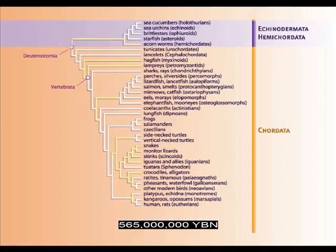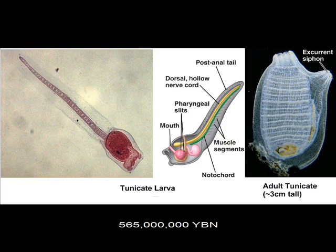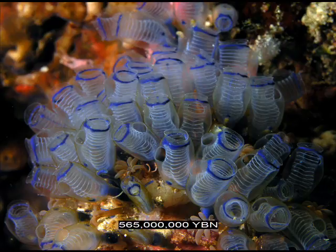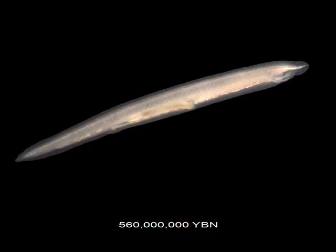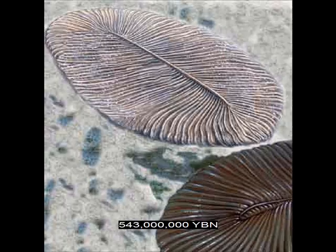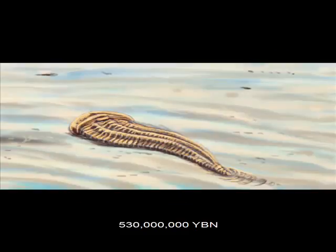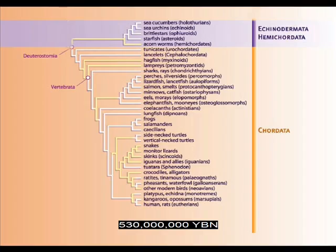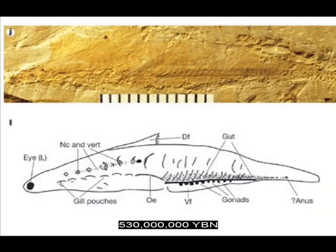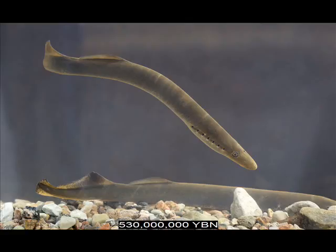Chordates — ancestor of all tunicates, fish, amphibians, reptiles, mammals, and birds. Tunicates. First fish. Segmentation. Heart. Mollusks. Arthropods. Crustaceans. Insects. Vertebrates — ancestor of most fish and all amphibians, reptiles, mammals, and birds.